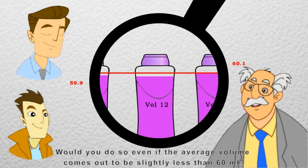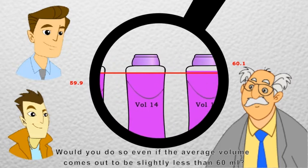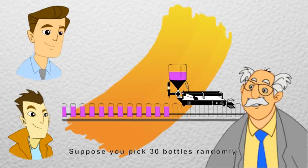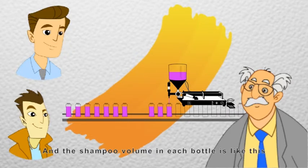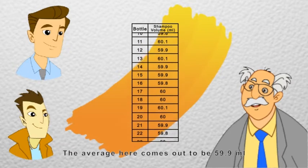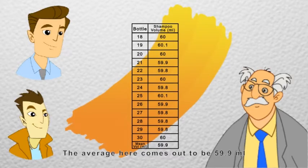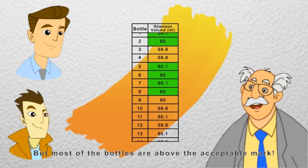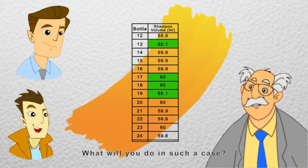Would you do so even if the average volume comes out to be slightly less than 60 ml? Like for example, suppose you pick 30 bottles randomly and the shampoo volume in each bottle is like this. The average here comes out to be 59.9 ml, but most of the bottles are above the acceptable mark. What will you do in such a case?